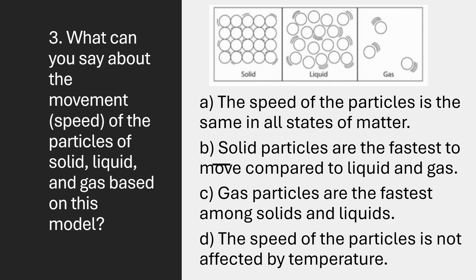What can you say about the movement and speed of the particles of solid, liquid, and gas based on this model? A. The speed of the particles is the same in all states of matter. B. Solid particles are the fastest to move compared to liquid and gas. C. Gas particles are the fastest among solids and liquids. D. The speed of the particles is not affected by temperature.